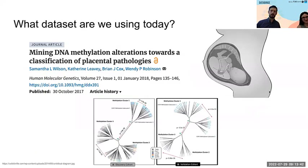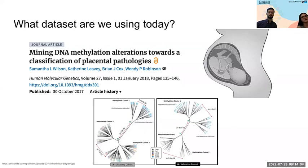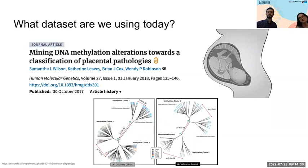This is the dataset we're using today. It's publicly available, generated by the Robinson lab in 2016 — a placenta dataset. The placenta is the organ along the top edge of the uterus that's fetally derived and supports molecular transport during gestation, interfacing between maternal and fetal blood. We ran DNA methylation analyses using the 450k array to look at DNA methylation at 450,000 CpG sites genome-wide. The original results are published in a paper by Sam Wilson, showing placental DNA methylation clusters by pathology, including preeclampsia.